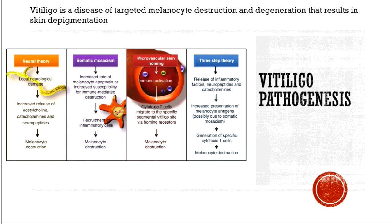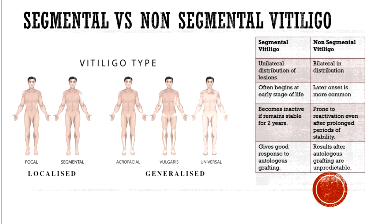Vitiligo is a disease of targeted melanocyte destruction and degeneration that results in skin depigmentation. There are many mechanisms already proposed in the literature, including neural theory, somatic mosaicism, microvascular skin homing, and the three-step theory. Vitiligo can be classified broadly as either segmental or non-segmental, and there are many clinical differences among them.